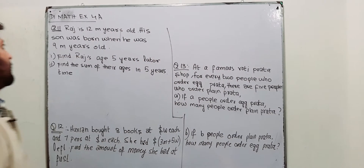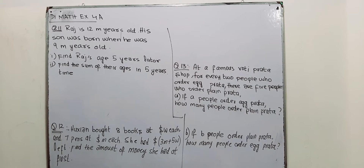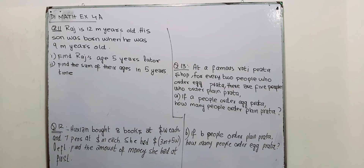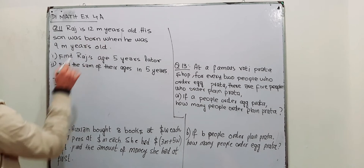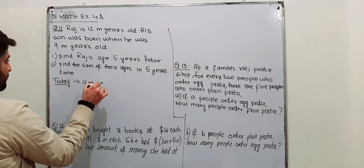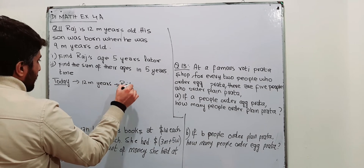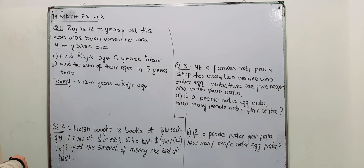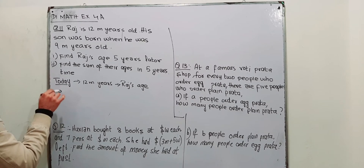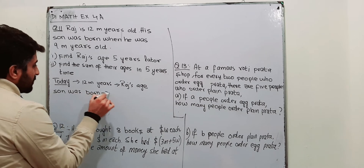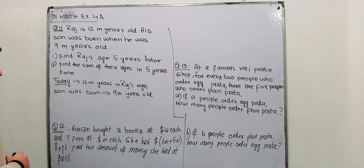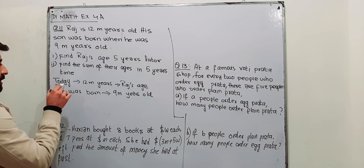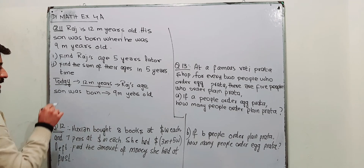Starting from question number 11, Exercise 4a: Raj is 12m years old. His son was born when he was 9m years old. Today, when we are talking about today, Raj is 12m years old — this is Raj's age today. When his son was born, he was 9m years old. Find Raj's age 5 years later. Today his age is 12m years.